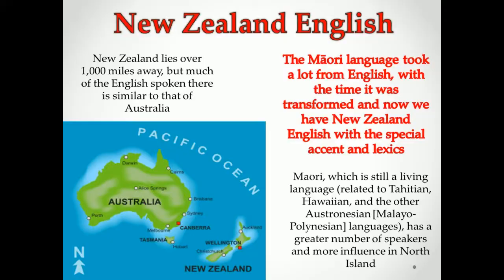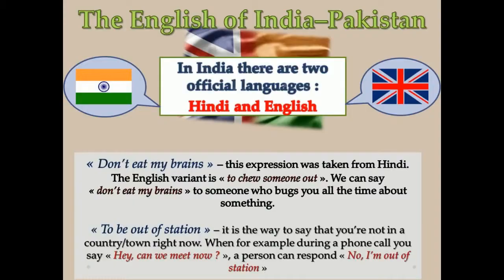In 1950 India became a federal republic within the Commonwealth of Nations, and Hindi was declared the first national language. In 1967, by the terms of the English Language Amendment Bill, English was proclaimed an alternative official or associate language alongside Hindi until all non-Hindi states had agreed to its being dropped. Although English keeps its lexical, grammatical, and phonetical structure, idiomatic expressions and colloquial speech have been taken from Indian languages.